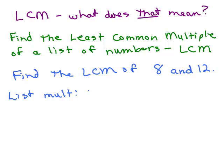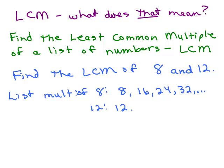We're going to list the multiples of 8. So 8 times 1, 8 times 2, 8 times 3 — basically, you just keep adding 8 and you'll get all the multiples of 8. This list goes on forever. Then we list the multiples of 12: 12 times 1, 12 times 2, 12 times 3, et cetera. This list also goes on forever.